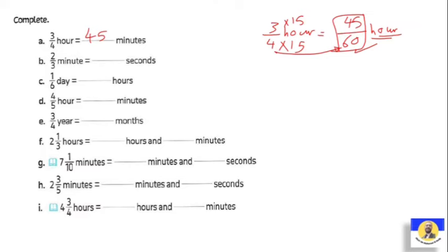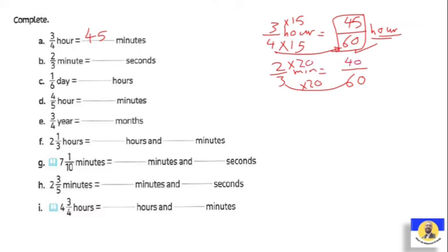If I have two thirds of a minute, equal how many seconds? As agreed, a minute has 60 seconds, so we need the denominator to be 60. To get from 3 to 60, multiply by 20. So we also multiply the numerator: 2 × 20 = 40. Therefore two thirds of a minute equals 40 seconds.